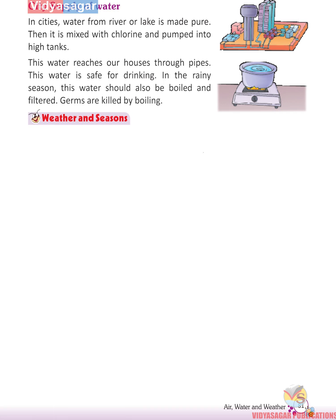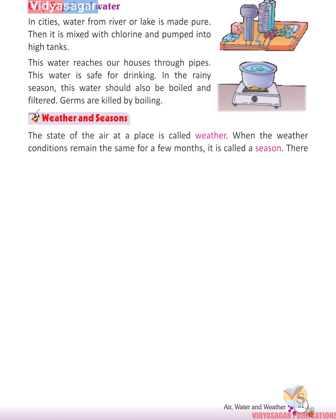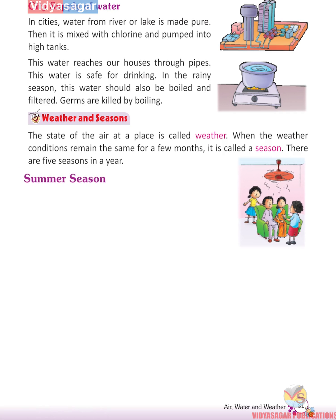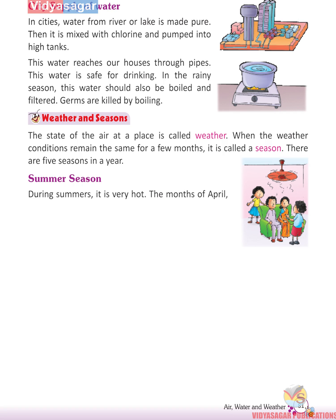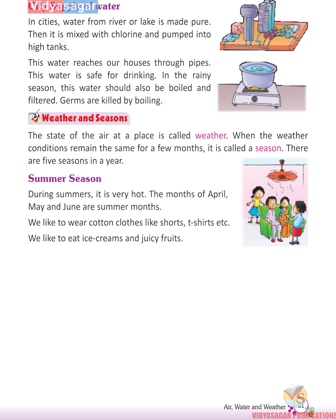Weather and Seasons: The state of the air at a place is called weather. When weather conditions remain the same for a few months, it is called a season. There are five seasons in a year. During summer, it is very hot — April, May, and June are summer months. We wear cotton clothes like shorts and t-shirts, eat ice creams and juicy fruits, and use fans, coolers, and air conditioners.